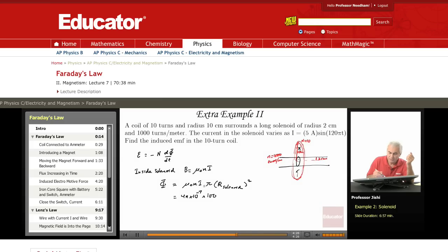Times I, which is 5 times sine 120πT, that's I. And then π, that's another π.